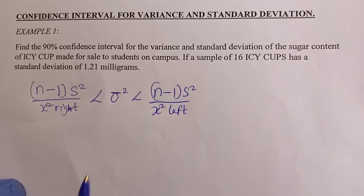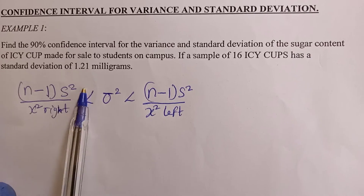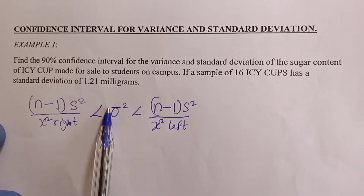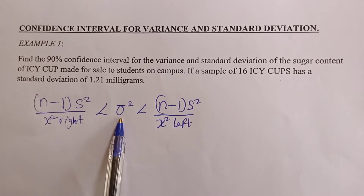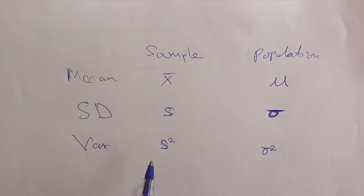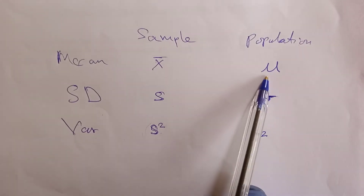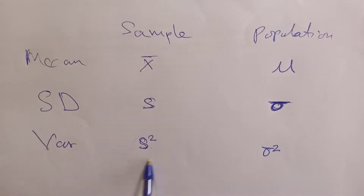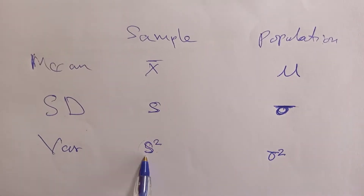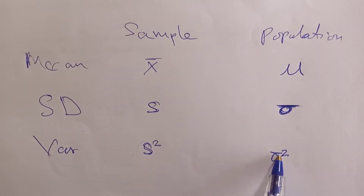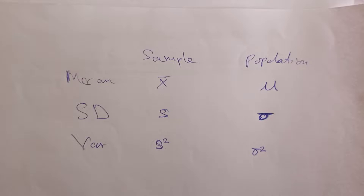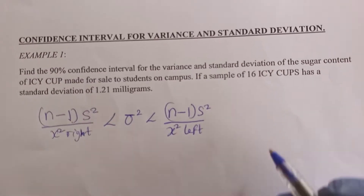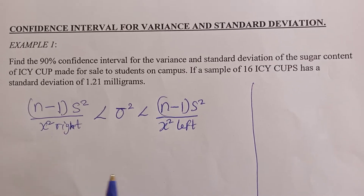To do this, the formula you are going to use is: (n minus 1) times s-squared, all divided by chi-right, is less than the population variance, which is less than (n minus 1) times s-squared divided by chi-left. We are estimating population variance. Remember: s-bar is sample mean, μ is population mean, s is sample standard deviation, σ is population standard deviation, s-squared is sample variance, and σ-squared is population variance.